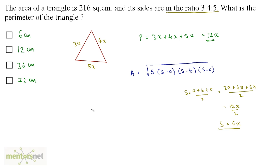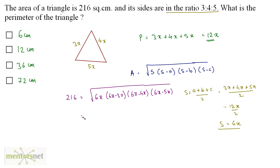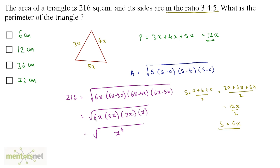Substituting into the formula with area = 216: 216 equals the square root of 6x times (6x − 3x) times (6x − 4x) times (6x − 5x), which simplifies to the square root of 6x times 3x times 2x times x. That gives the square root of 36x⁴, which equals 6x². Therefore x squared equals 216 divided by 6, giving x squared equals 36.